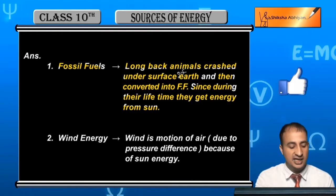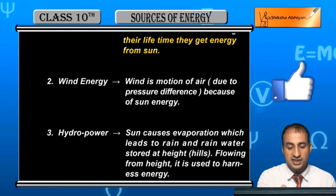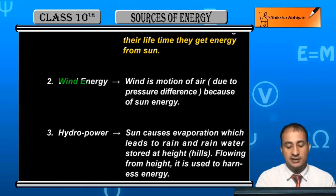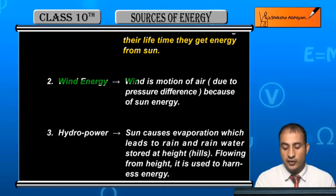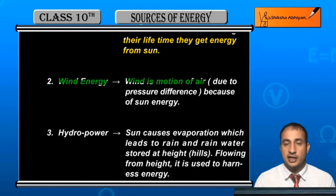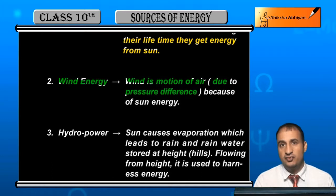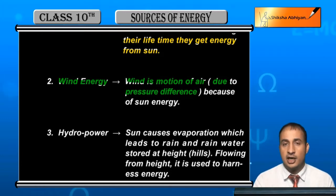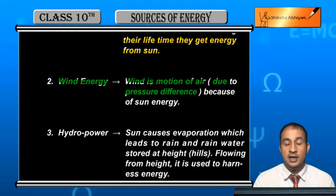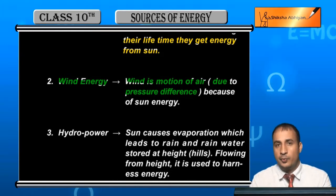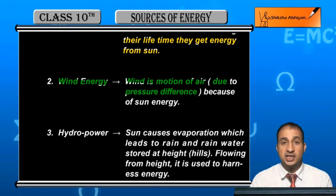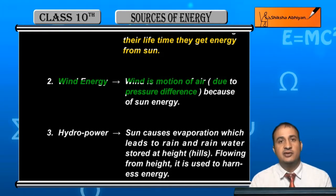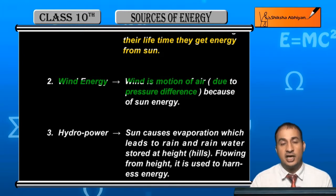Ab baat karte hain wind energy ki. Wind energy — it is the motion of air. Wind moves from high pressure to low pressure. This pressure difference is created by the sun's energy heating different parts of the earth.